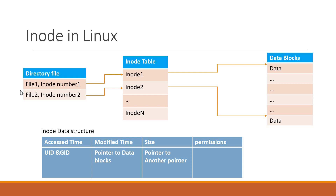Similar to file one, we can also create a number of files. Each will have a corresponding INODE number and each will have an entry in the INODE table. This way INODE is an important data structure in the Linux file system. If it is corrupted, we cannot access the files or directories inside Linux.